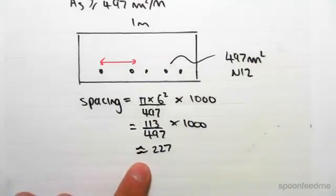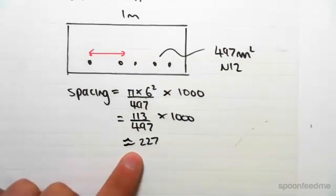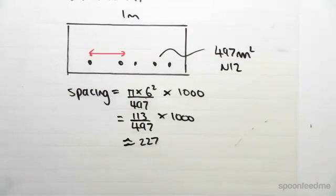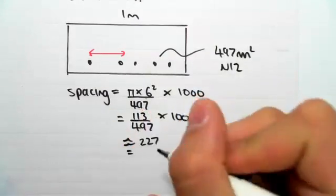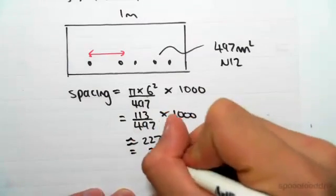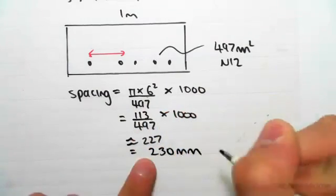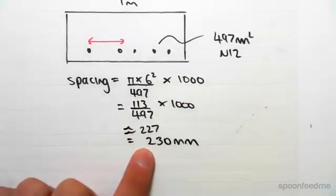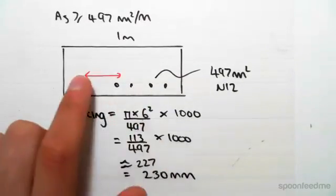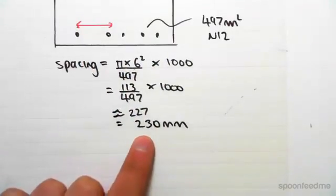Now whenever you give spacing, you don't want to give it to stupid values like this, you want to give it a nice rounded value, because what's actually going to happen is you're going to put this on a drawing and a builder's going to come and he's not going to measure it to 227 millimeters. You want to give a nice value. So to be a little bit conservative, we're going to give it as 230 millimeters. That's a lot nicer. So we now know that the spacing in our slab between each N12 bar is at 230 millimeters.